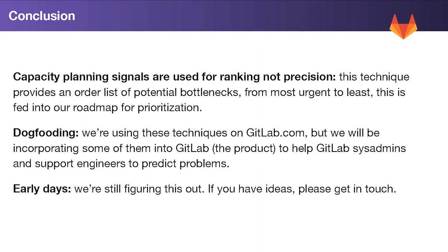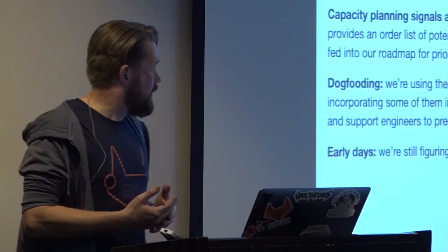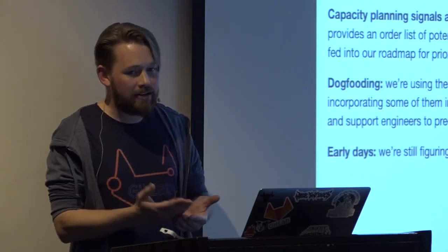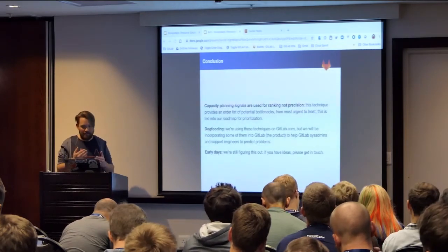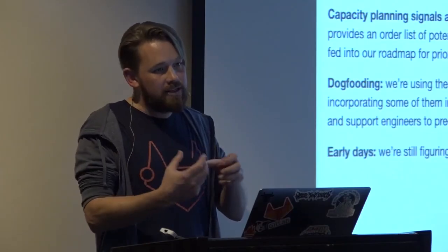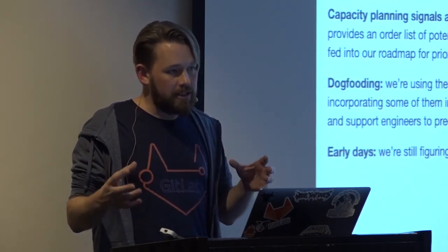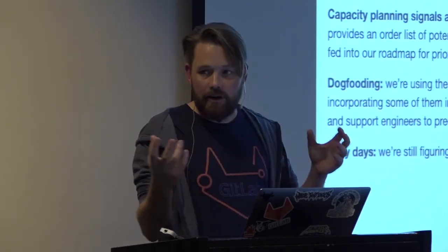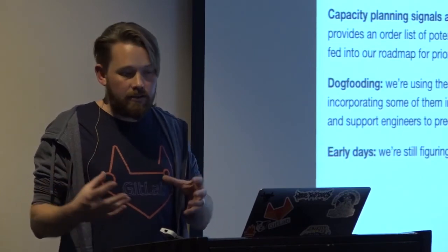Some points in wrapping up: what we're trying to build is an early warning system. What we want to do is rank potential problems from worst potential risk downward so we can prioritize upcoming work, feed this into our roadmap, and avoid problems before they become a big issue. At GitLab one of our values is dogfooding — everything we do has to go back into the product. Our CEO is always saying if you need it, other people need it. So a lot of what we're doing here will make its way back into the product. We're iterating on it very quickly on GitLab.com, and in the next few months the product will have this built in — system administrators and support engineers will be able to look at these graphs and say you really need to start thinking about upgrading your Redis or whatever it is.